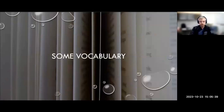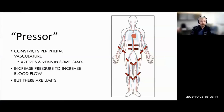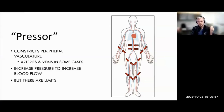First we'll go over some vocabulary. When you hear the term pressor, in the strictest sense, this is something that constricts peripheral vessels specifically — more arteries, sometimes arteries and veins, depending on the agent. The idea here is to clamp down and increase the pressure within that tubular structure, which is the arteries, to increase flow and blood flow to the organs.